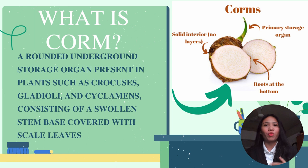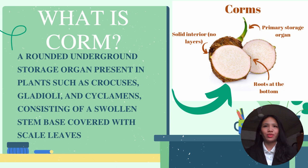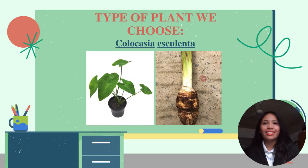Our group topic is about corms in vegetative propagation. I will introduce you what is a corm. A corm is a rounded underground storage organ present in plants such as Crocus, gladioli, and cyclamens, consisting of a swollen stem base covered with scale leaves. As you can see on the screen, this is an example of corms.